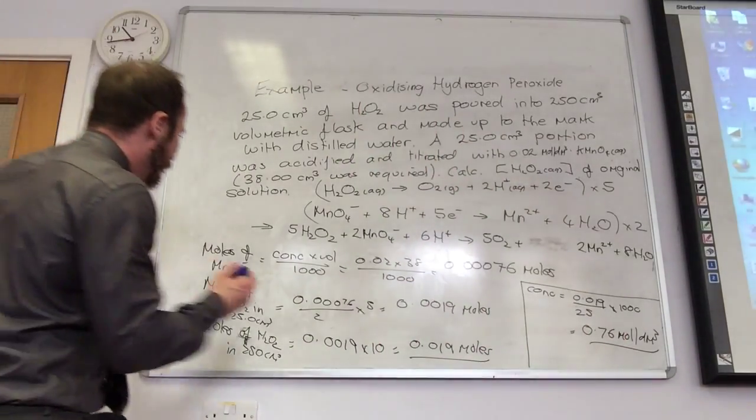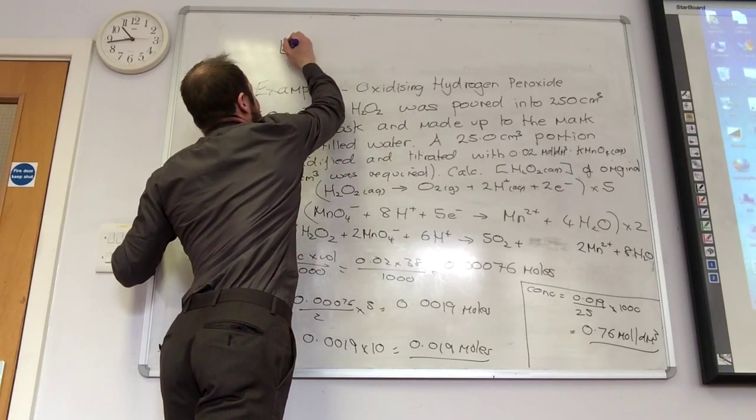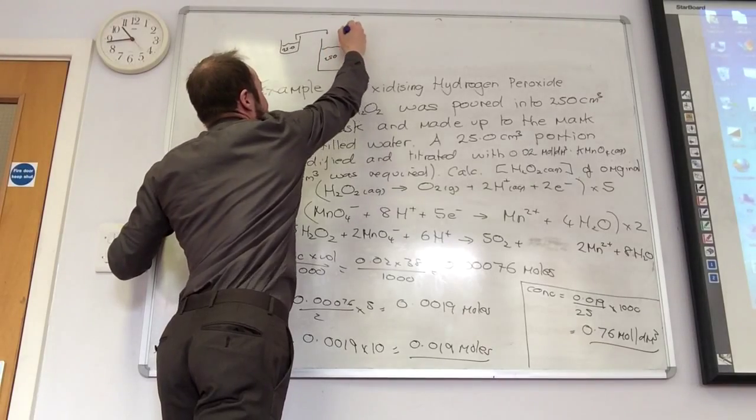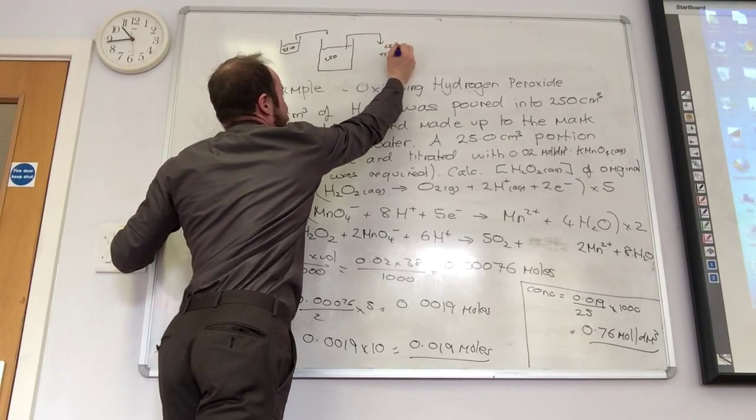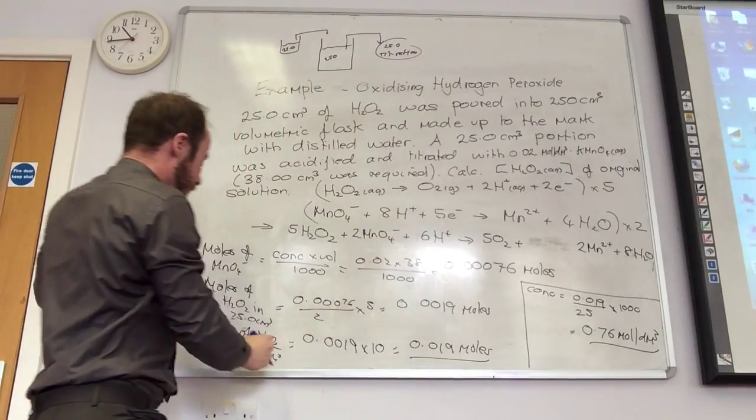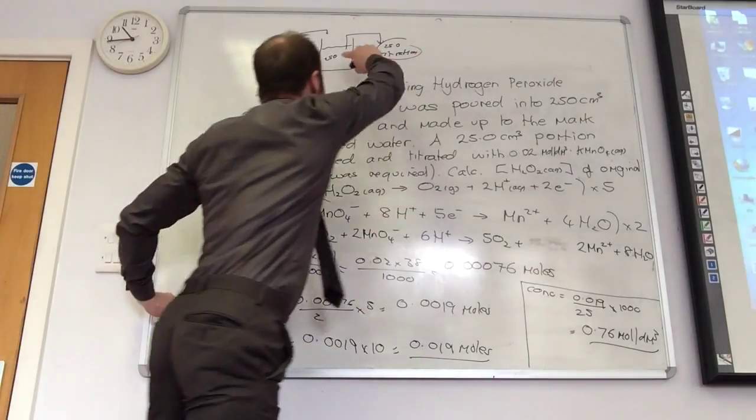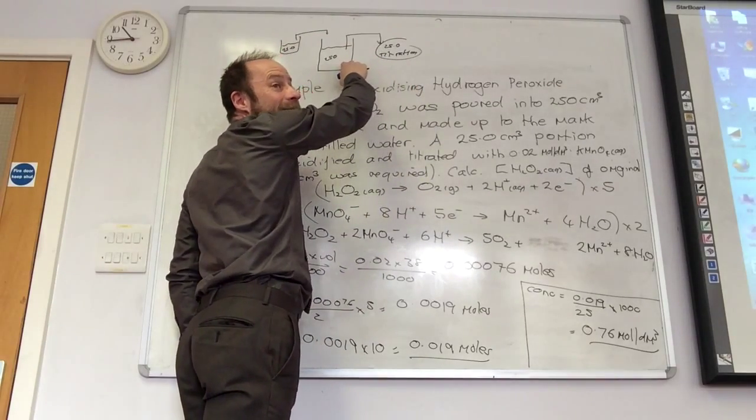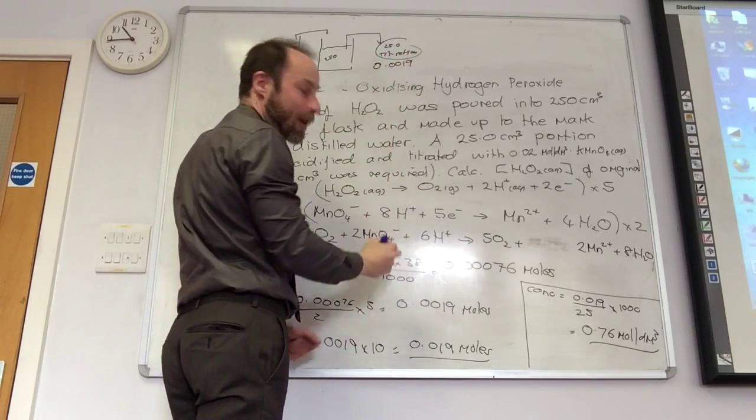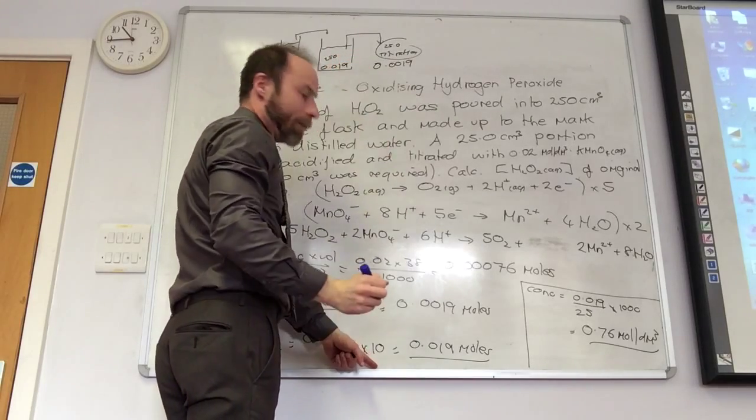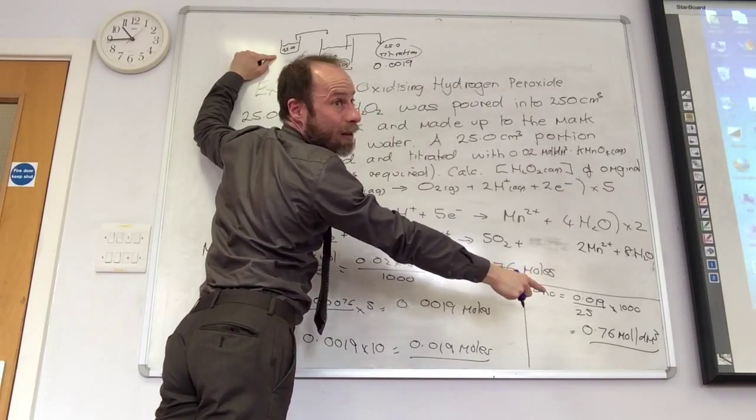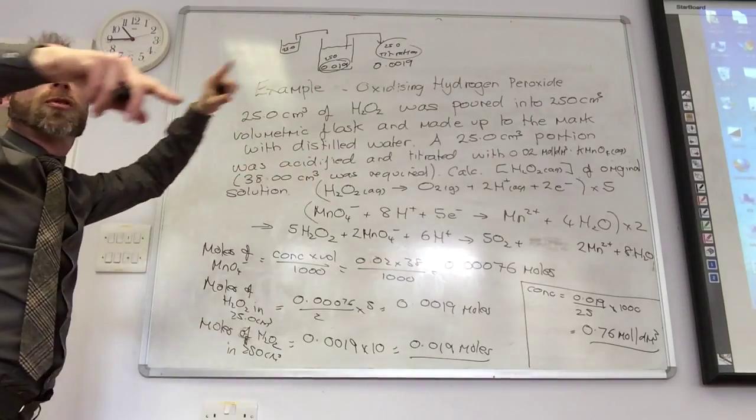So the reason why is because originally I took 25 centimeters cubed and I made it to 250. And then from that, I took 25 centimeters cubed to do the titration with. Here, I found out how many was in that 25. I then scaled that up. How much must be in all of the solution? In that 25 was 0.0019 moles. Therefore, in here was 0.019 moles. All of those must have come from that original 25, which is why I do that there. So it sometimes helps to draw a little picture for yourself.